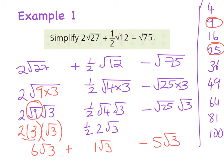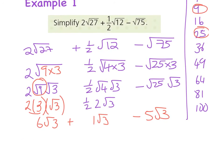And now because I've rewritten them in a different format I can actually add or subtract at this point. So what was my question? It was 2√27 which is now 6√3 plus (1/2)√12 which is now 1√3 minus √75 which is 5√3. So I can add as normal. 6√3 plus 1√3 is 7√3 minus 5√3 gives me a total of 2√3 is my answer.